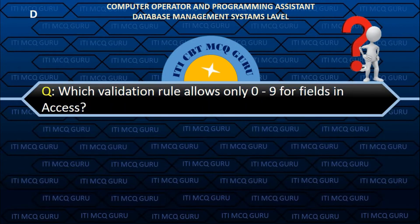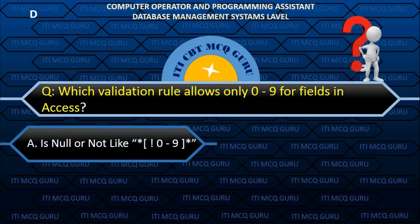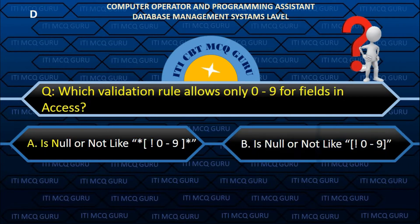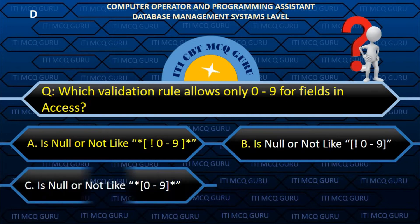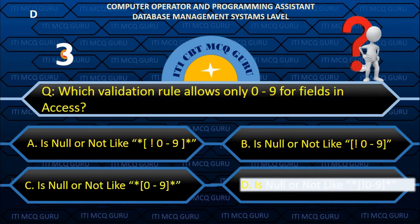Which validation rule allows only 0 to 9 for fields in Access? D. Is Null Or Not Like.